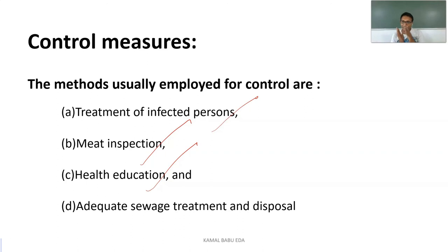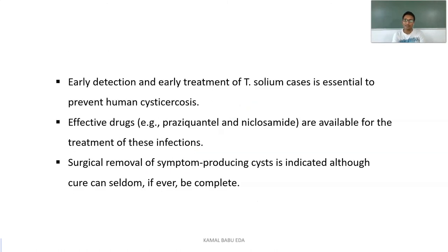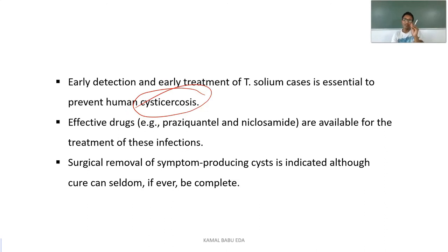Meat inspection before public consumption helps prevent many diseases. Early detection and treatment of Taenia solium cases is essential to prevent cysticercosis. The drugs used for treatment are praziquantel and niclosamide. Other control measures include thorough cooking of beef and pork, educating the public to prevent soil, water, and food pollution with human feces, and handwashing before eating and after defecation.